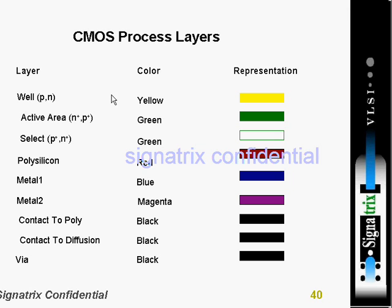In order to represent process layers in layout, color codes are used so designers can identify each layer by its color. Wells are shown in yellow, active area (n-plus or p-plus) in green, select also in green, polysilicon in red, metal one in blue, metal two in magenta, contact to poly in black, contact to diffusion in black, and via in black. These color codings make the designer's life simpler.